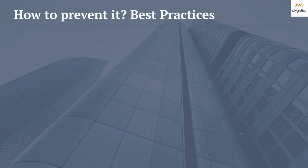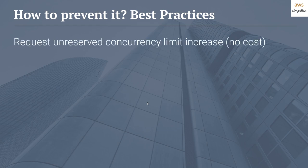Moving on to best practices for preventing throttling. The first and probably the easiest thing you can do is request an unreserved concurrency limit increase — at no cost to you. The default limit per account per region is 1000. In my experience, I've had this raised to 5000 without paying anything extra. You do this by going to the support center in the AWS console, contacting support with a technical request, and asking them to increase the limit. Afterward, you should see the unreserved concurrency limit updated under the configuration section of your Lambda.